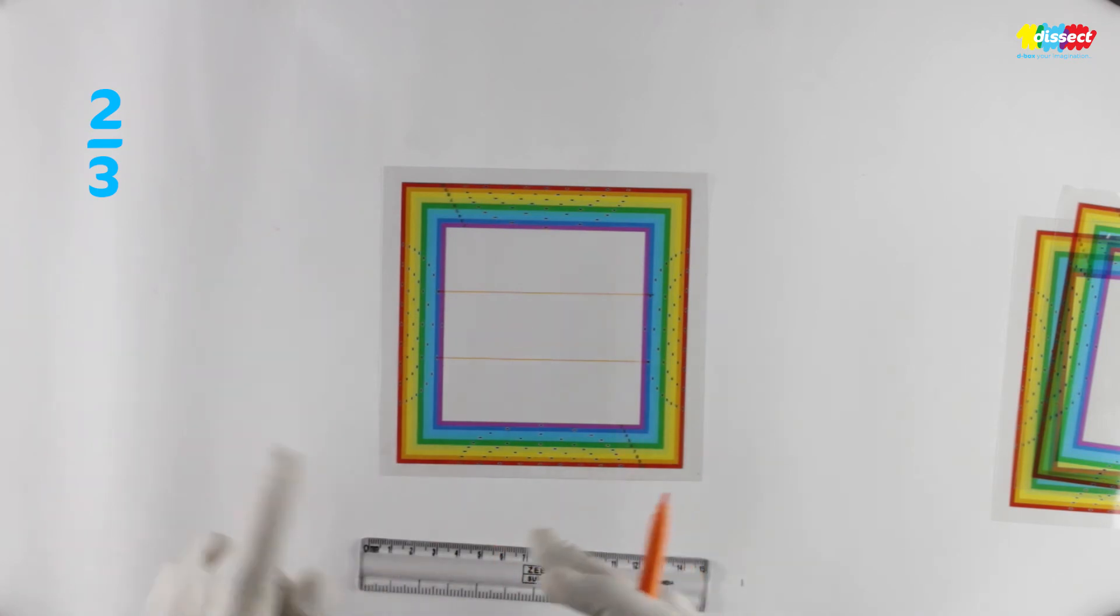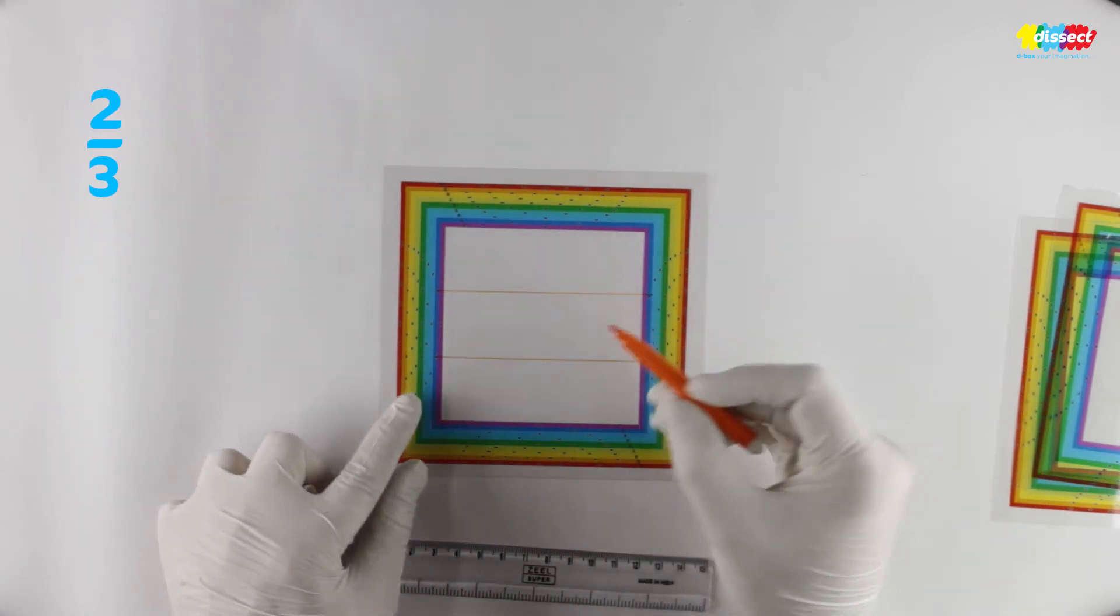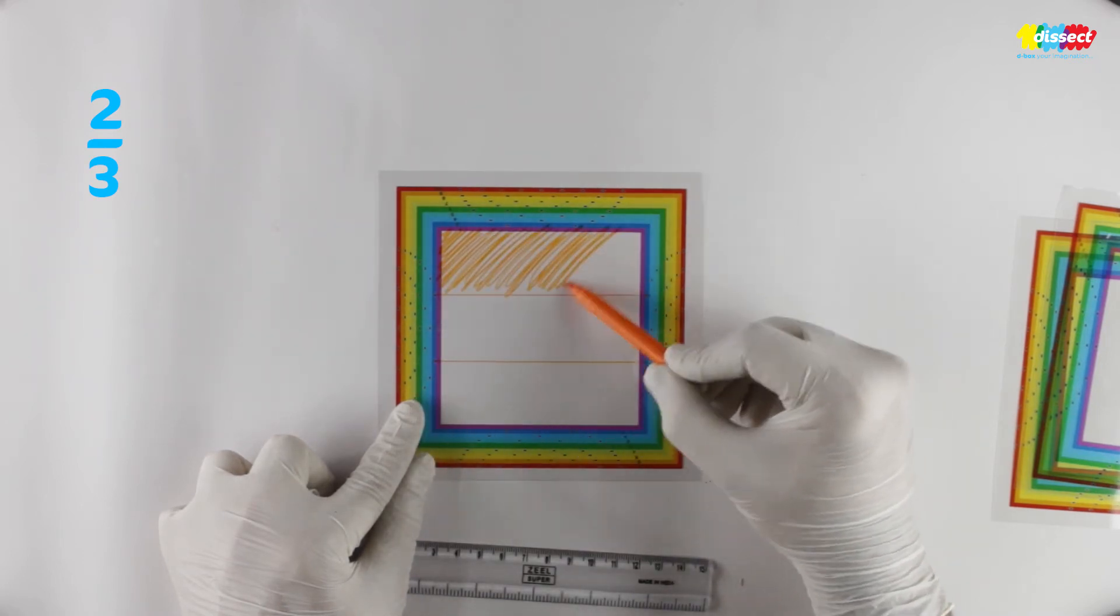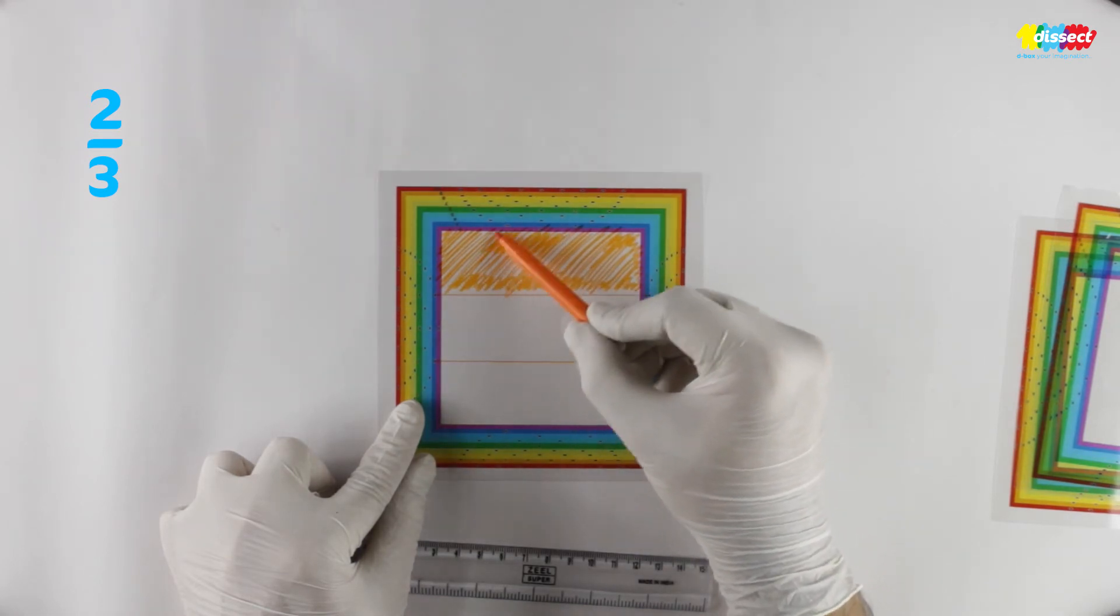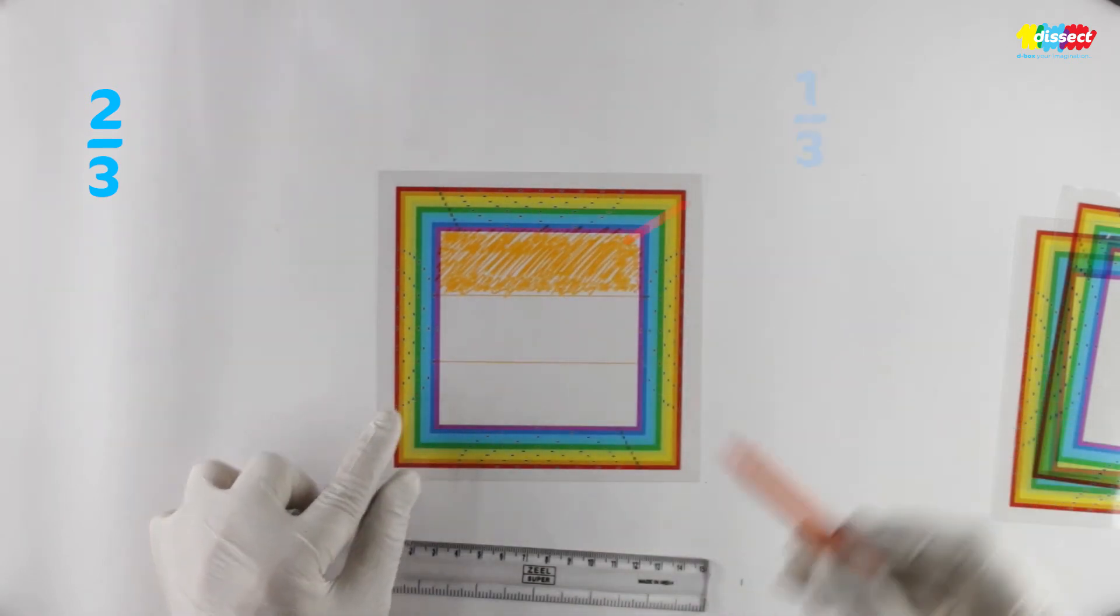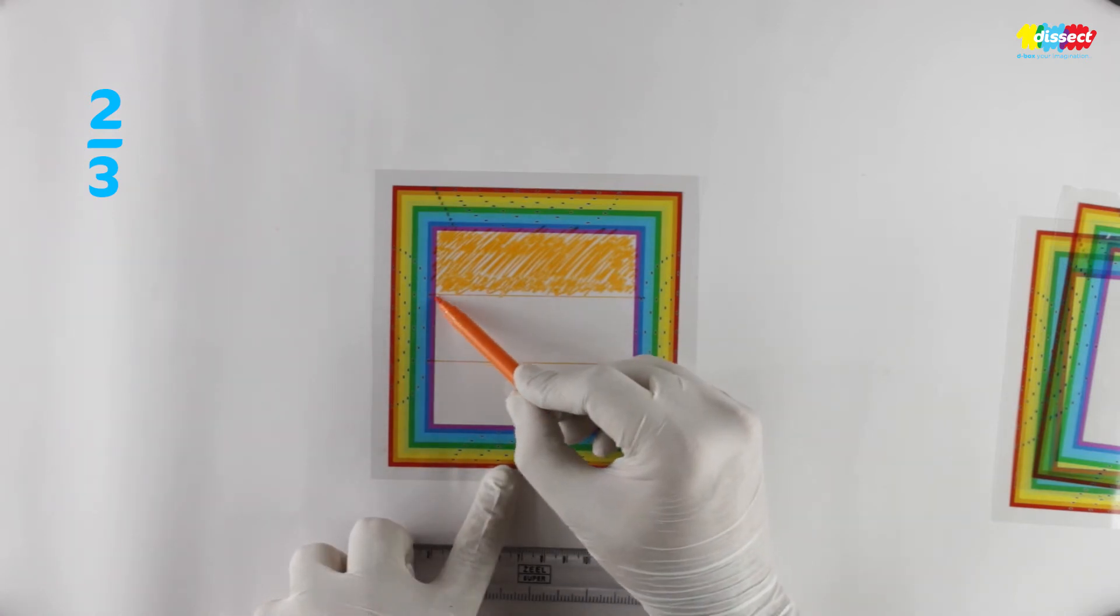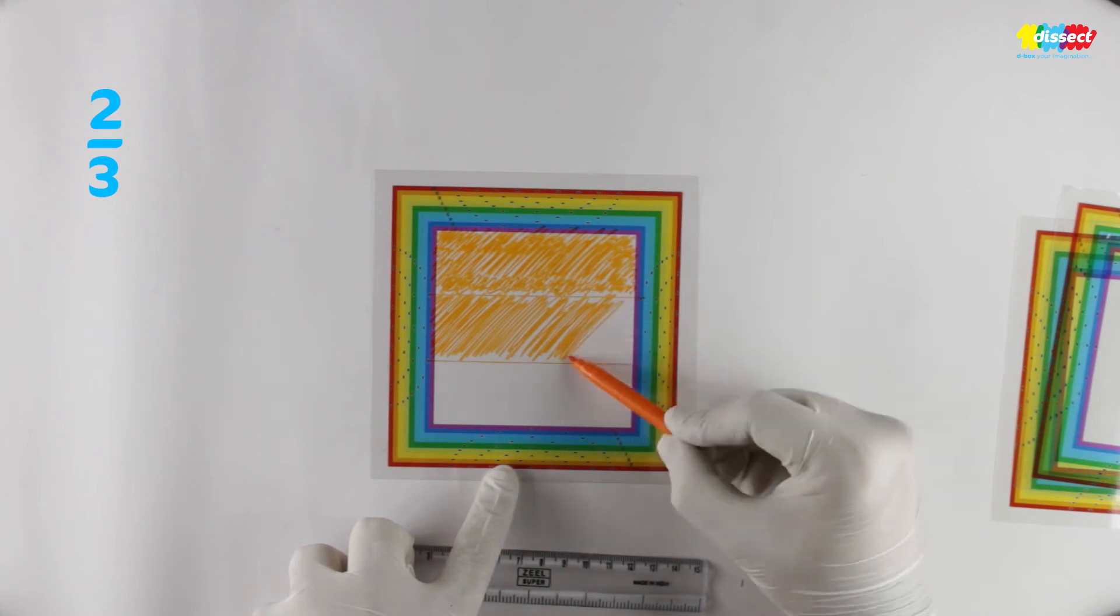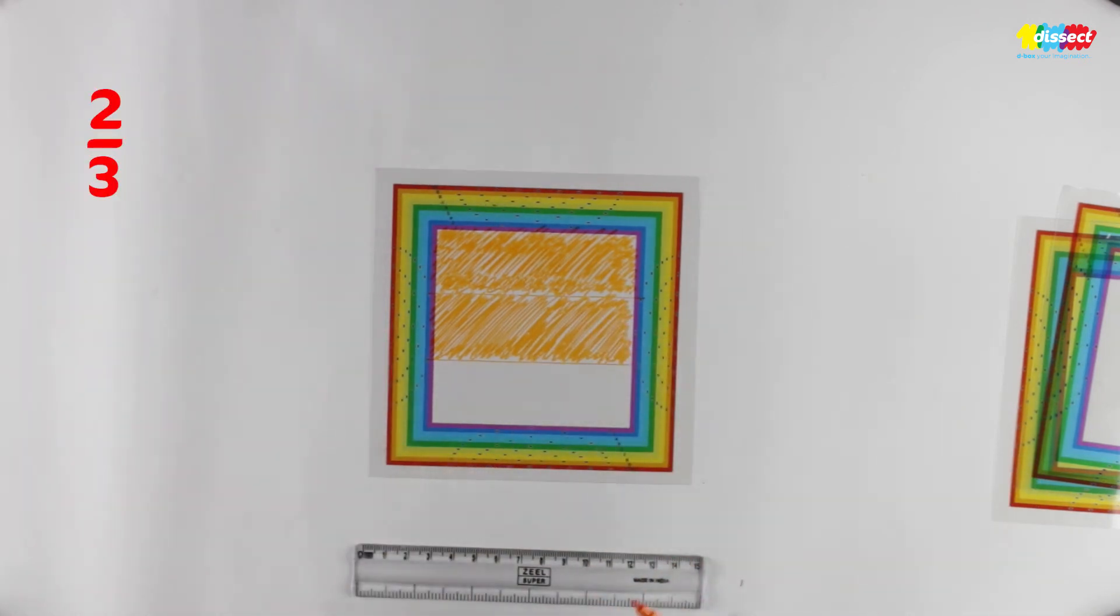Now our rational number is 2 by 3. What it means is we have to shade 2 out of these 3 pieces. So let us shade that. So my fraction has now become 1 upon 3 but we need 2 upon 3. So now I am going to shade one more part of these 3. So this is my fraction 2 upon 3.